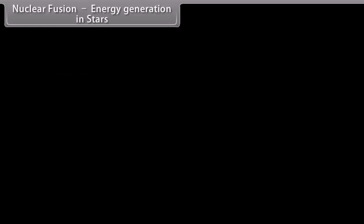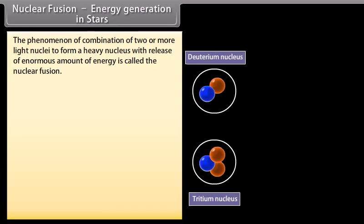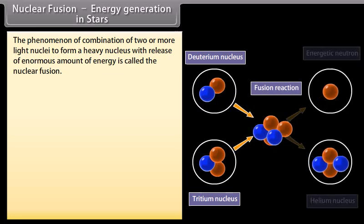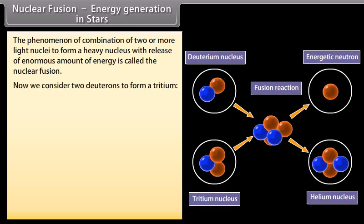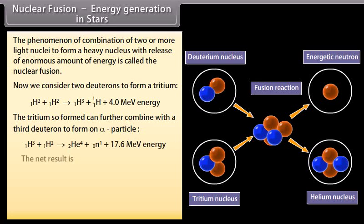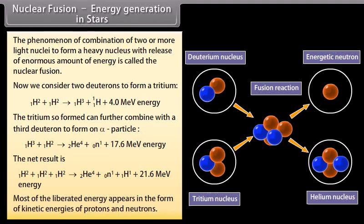Nuclear fusion. Energy generation in stars. The phenomenon of combination of two or more light nuclei to form a heavy nucleus with release of enormous amount of energy is called the nuclear fusion. Now we consider two deutrons to form a tritium. The tritium so formed can further combine with the third deutron to form an alpha particle. The net result is. Most of the liberated energy appears in the form of kinetic energies of protons and neutrons.